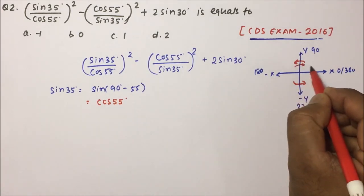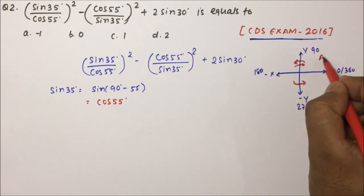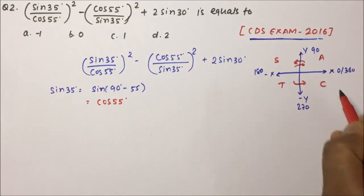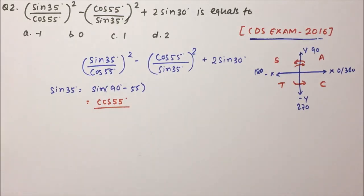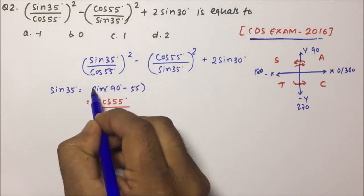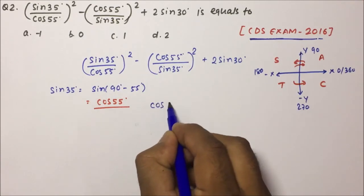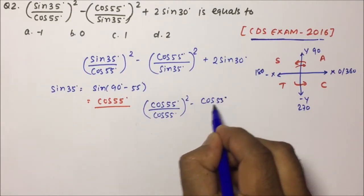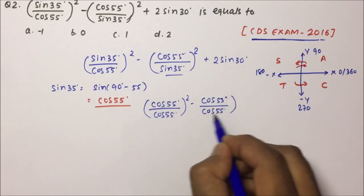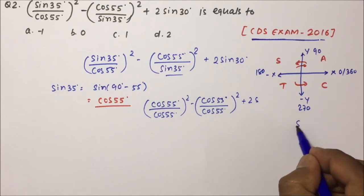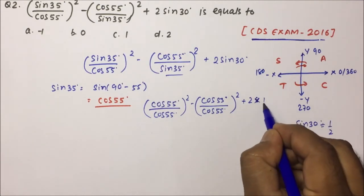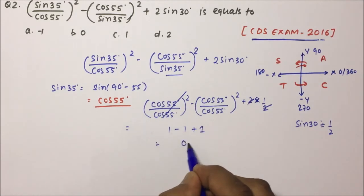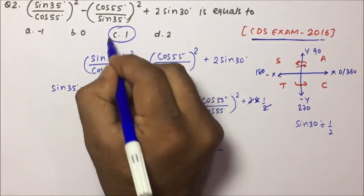Wherever sin 35° appears, we replace it with cos 55°. So the expression becomes [cos 55°/cos 55°]² − [cos 55°/cos 55°]² + 2 sin 30°. The value of sin 30° is 1/2, so 2 × 1/2 = 1. The first two terms cancel: 1 − 1 = 0, and 0 + 1 = 1. So the value for this question is 1.